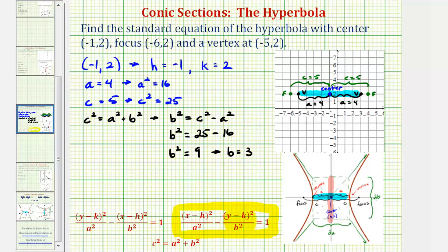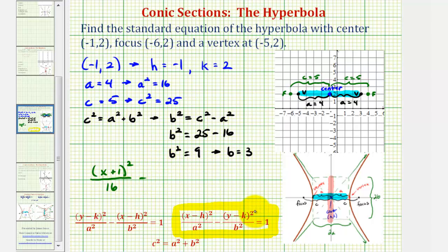So the equation of our hyperbola is: the quantity x minus negative one, which becomes x plus one, squared divided by a squared, which is 16, minus the quantity y minus two squared divided by b squared, which is nine, equals one.